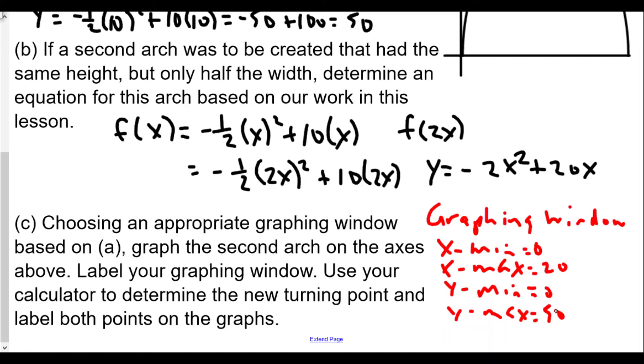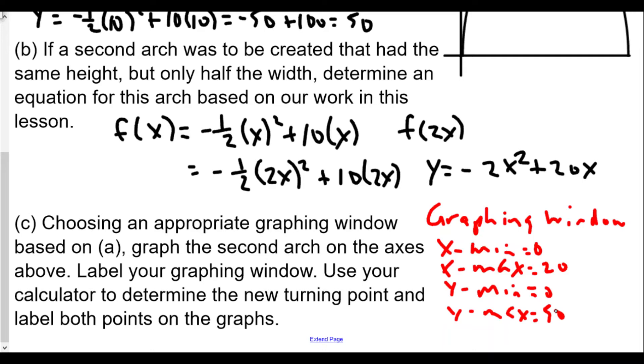And using your calculator, determine the new turning point and label both points on the graph. So we're going to sketch our graph here. Okay? So eventually going to kind of sketch it onto our top here. So now go back to the calculator. We're going to now try to find the new vertex. Now we kind of know where it might be. Alright? Because it kind of looks like the height here is 50, and halfway it might be 5, 50. But we'll take a look.